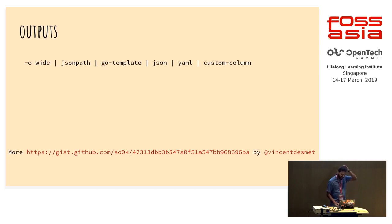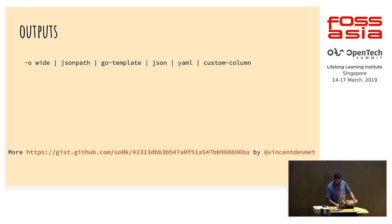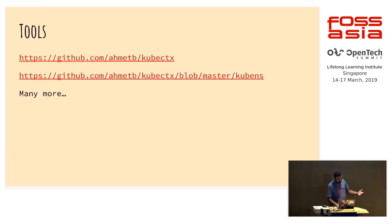The last topic is output. If you want output in a nice format, there are many options beyond just JSON and YAML — like JSONPath or custom columns. There's a nice collection of all those output hacks at a link by Vincent Desmit, who is an organizer for Kubernetes meetup in Singapore. If you need more help, there are many tools available.